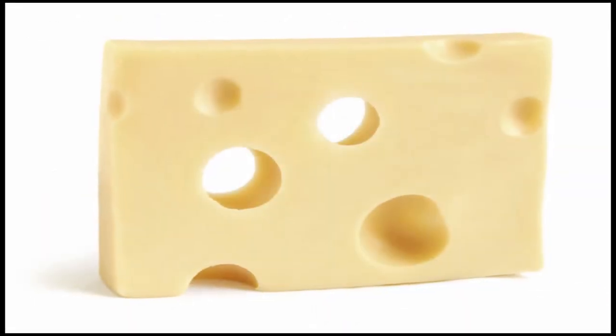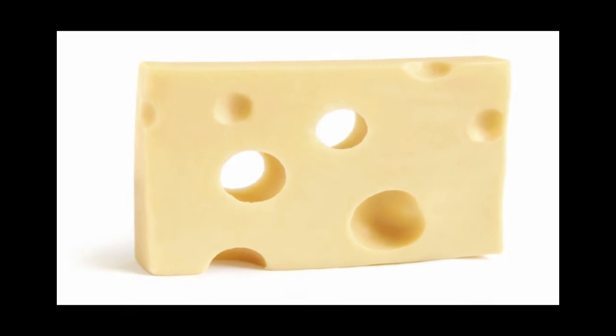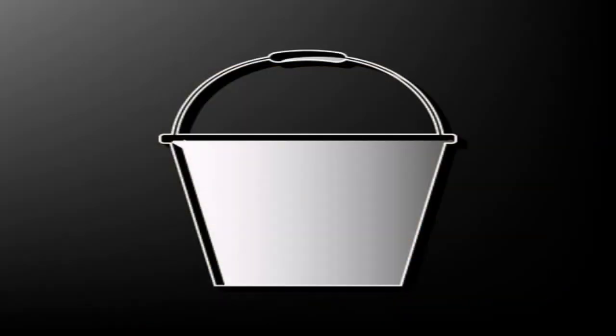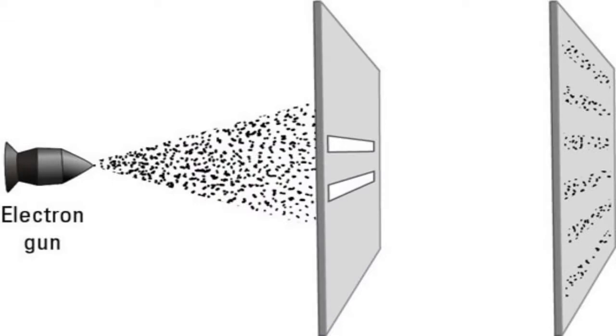Imagine a piece of Swiss cheese. Now imagine that you were to throw a bucket full of electrons at that Swiss cheese. Let us assume for a moment that the Swiss cheese is infinitely large, so nothing will go around the corners. Most of the electrons would just get stuck on the cheese, but some others will pass through the holes and onto a wall behind it.